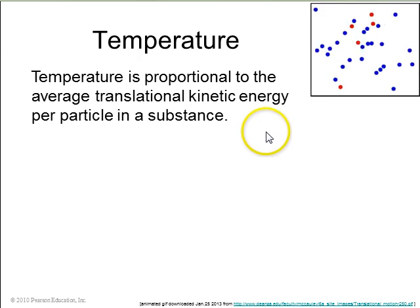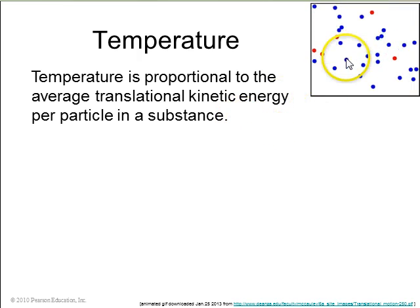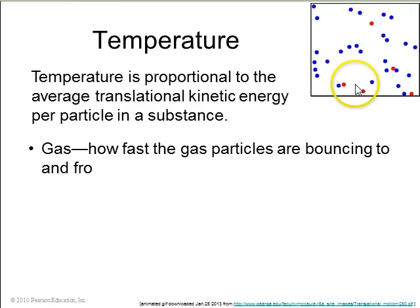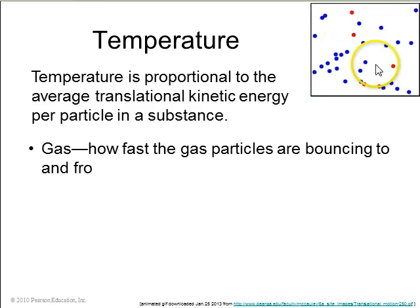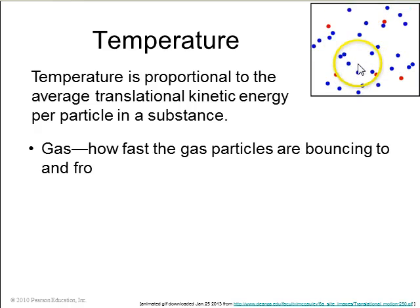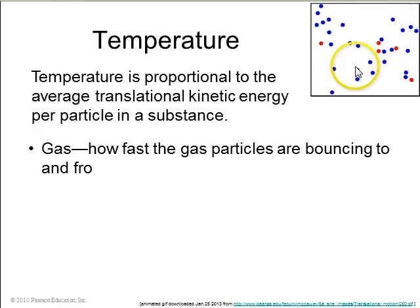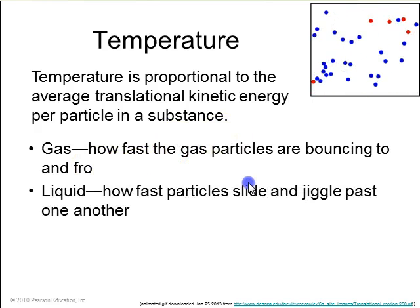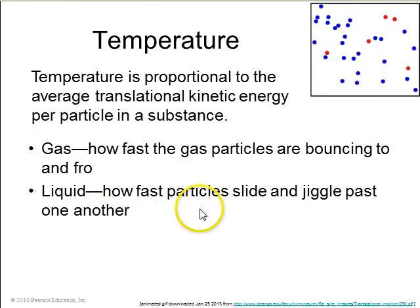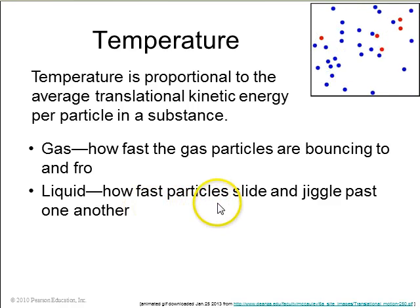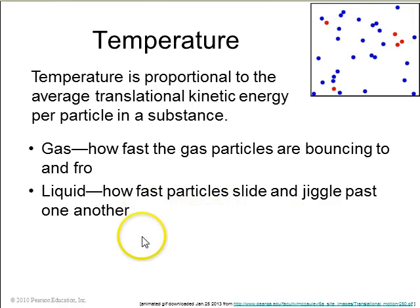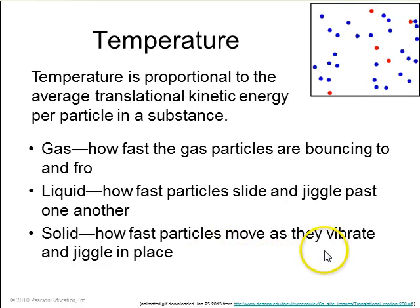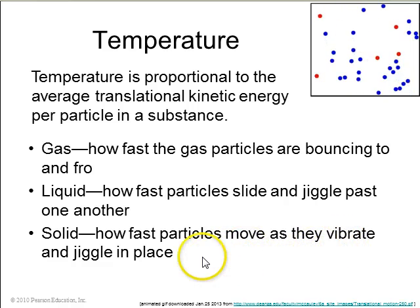Temperature is proportional to the average kinetic energy per particle in a substance. So for a gas, these molecules are moving around with some average speed and giving it some average kinetic energy — if that increases, that will increase the temperature. For a liquid, the temperature is related to how fast the particles are all sliding and jiggling past one another. And for a solid, it's how fast the particles move as they vibrate in place.